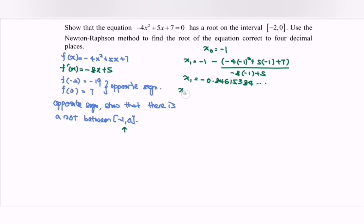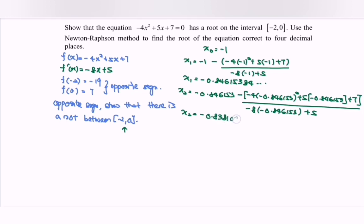So next, we have x₂. Kindly substitute -0.846153 minus, we have the bracket, -4(-0.846153)² + 5(-0.846153) + 7 over -8(-0.846153) + 5. So x₂ where we have -0.8381096.